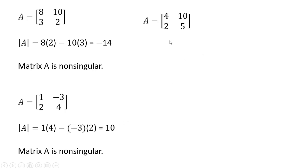Here's an example where we get a singular matrix. The determinant will be 0. So 4 times 5 minus 10 times 2. We get a determinant of 0. So this matrix is singular.